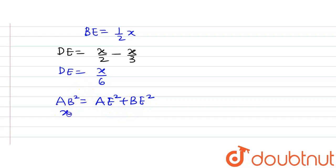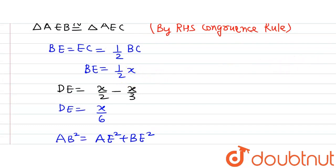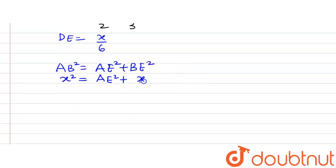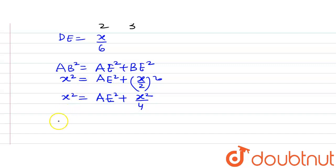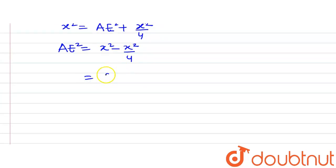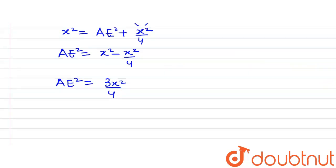Putting in the values: AB is X, so X square is equal to AE square plus BE square. BE is equal to X by 2, so X square equals AE square plus X square divided by 4. Rearranging, AE square equals X square minus X square by 4. Taking the LCM, we get AE square equals 3X square divided by 4.